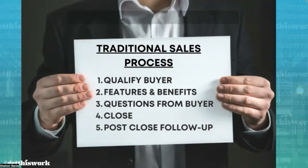Step two — features and benefits — is where the salesperson walks you over to the TV section and starts to vomit all the features and benefits at you. 'This is a 40-inch TV, this is a 50-inch TV, this TV is flat, this TV comes in 4K.' They just go on and vomit all of the features and benefits of the TV to you as the buyer.